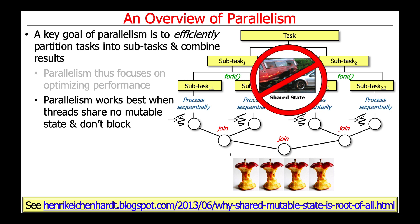Parallelism works best when threads share no mutable state and don't block. This concept of mutable state comes back and rears its ugly head. If you want to learn more about this, take a look at the link 'why shared mutable state is the root of all evil,' which is probably true. You don't want to share state while these different independent subtasks are running in parallel.